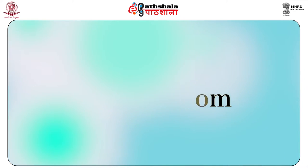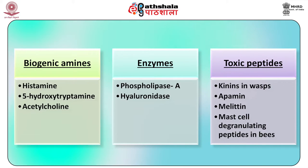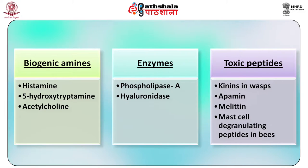The number of stings may be so great as to kill with primary toxicity. Hymenoptera venom is a mixture of biogenic amines (histamine, 5-hydroxytryptamine and acetylcholine), enzymes including phospholipase A and hyaluronidase, and toxic peptides (kinins in wasps; apamine, melittin and mast cell degranulating peptides in bees).